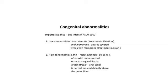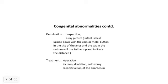High abnormalities include anorectal agenesis, often with rectourethral or rectovaginal fistula, and complete rectal atresia where the anal canal is normal but ends blindly above the pelvic floor. Examination involves inspection. An x-ray is taken with the infant held upside down with a coin or metal button at the site of the anus; the gas in the rectum rises to the top, indicating the distance.